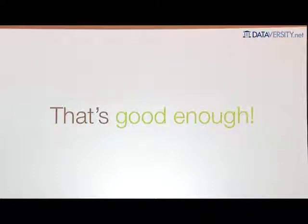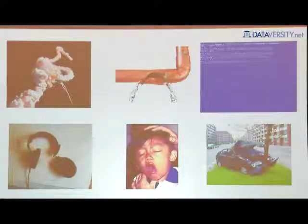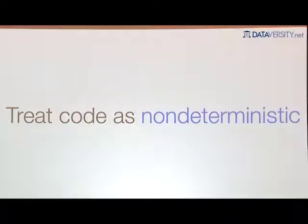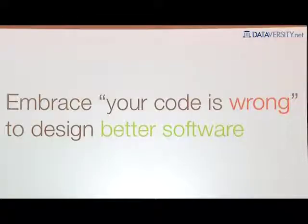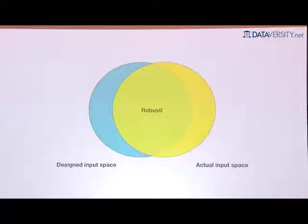That's actually good enough, because we're not in the business of creating perfect software — we're in the business of providing value to our users. Software does not have to be perfect to provide value, and that's a good thing, because otherwise we'd all be unemployed. The fact that things don't work perfectly is true of every machine we use, whether natural or man-made: rockets explode, pipes break, computers break, cars crash. Given that your code is wrong, it's wrong to treat it as deterministic. You have to treat it as probabilistic — as something that might work. And this brings me to the key point: when you embrace that your code is wrong, you can design much better software.